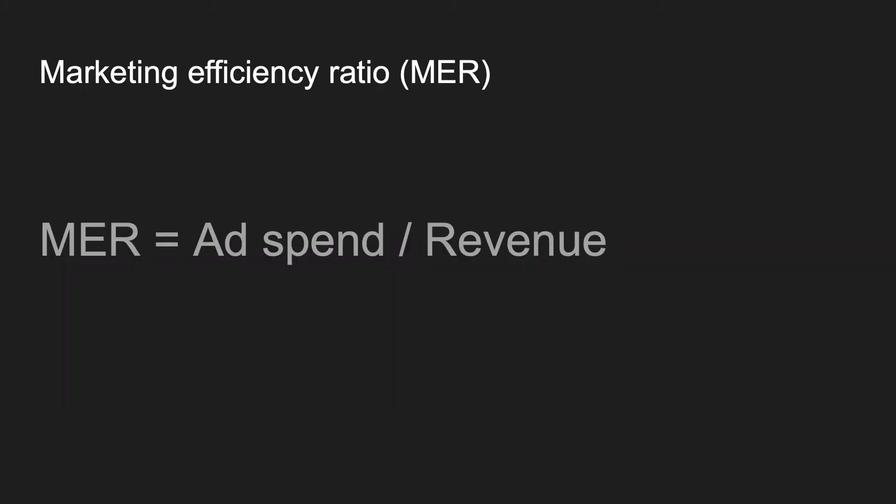Last but not least, I highly suggest you measure a marketing efficiency ratio, which is total ad spend divided by revenue. It is especially crucial when you are running ads across different channels and want to know how your marketing mix is performing. The easiest way to do it is to import cost data into Google Analytics and create a marketing efficiency ratio matrix in Data Studio with a breakdown by days and set a KPI for this matrix.